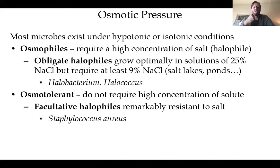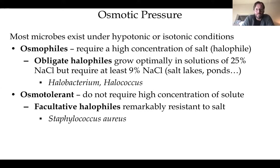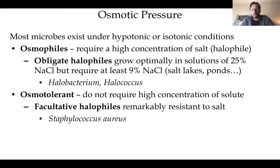Osmo-tolerant organisms don't require high concentrations of solute or salt but can subsist in those niches. Facultative halophiles are resistant to salt but don't need it — Staphylococcus aureus is an example. They have pumps that allow them to expel excess salt so it doesn't cause osmotic damage.